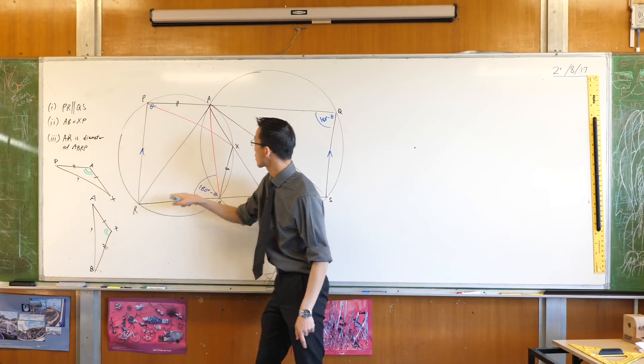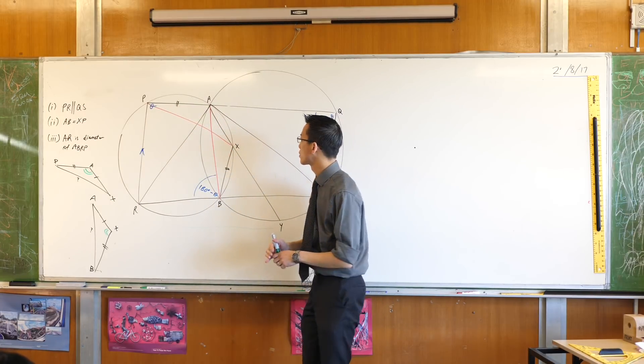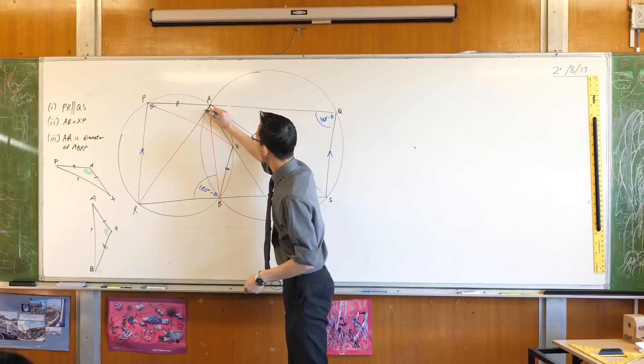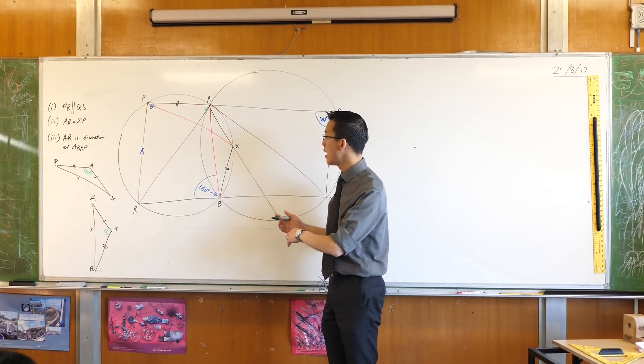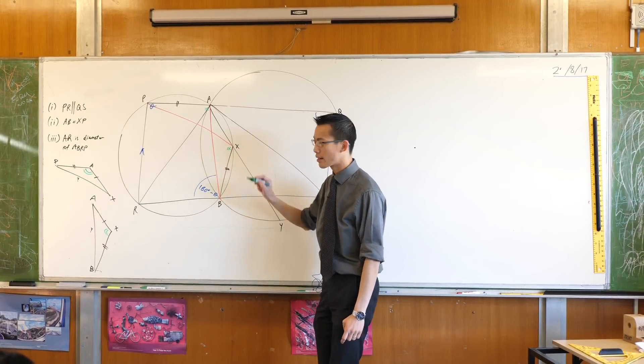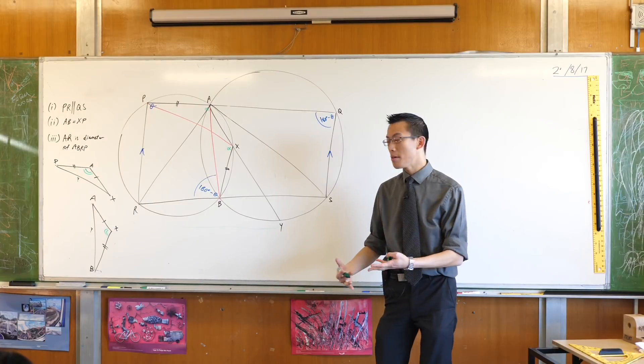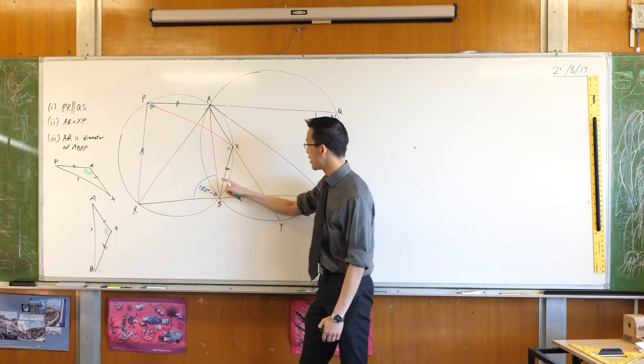So the way I did that was I had to be a bit sneaky with these angles. This angle here, PAX. PAX. It's made up of two different angles. So here's one of them. I'm going to call this one alpha. Do you remember? It was standing on the same arc as this angle over here. Can you see it? They're both alpha.